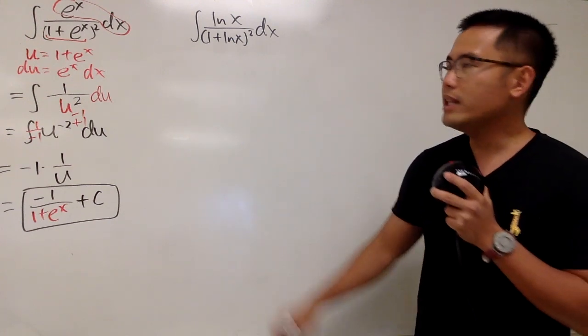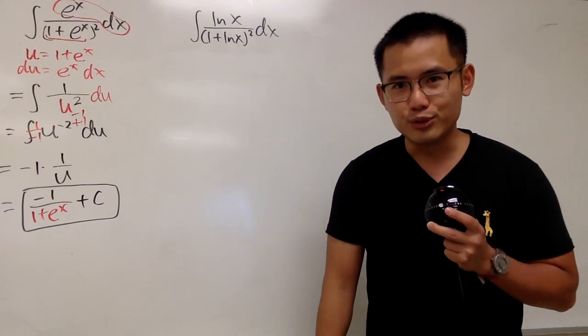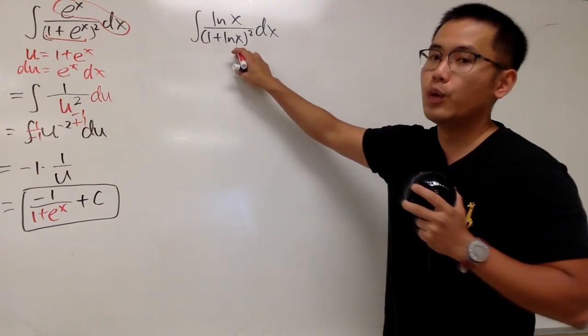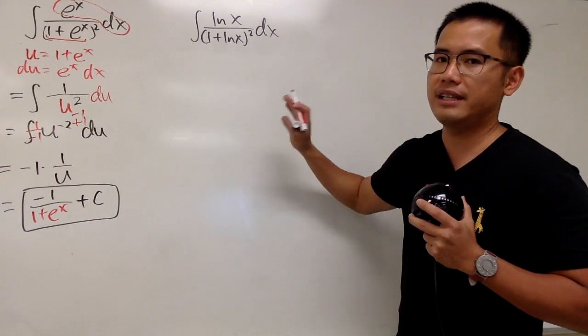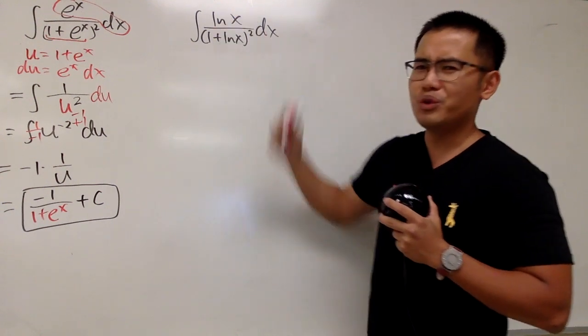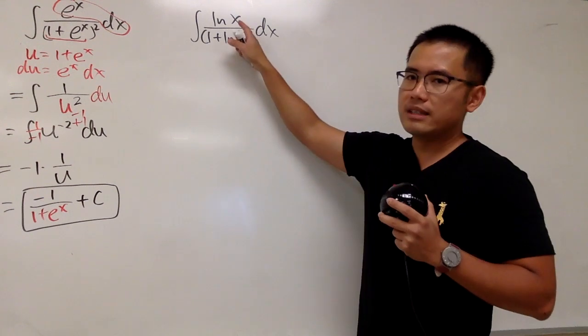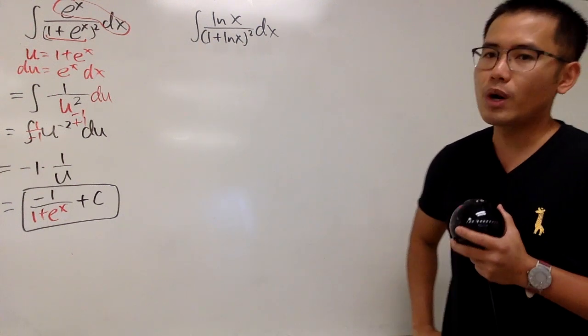Okay, now let's take a look of what if we have natural log of x right here and right here instead. Can we still use that? Well, if we let u equal to 1 plus natural log of x, we will have to get du equal to 1 over x dx. But unfortunately, we don't have 1 over x on the top. Somebody didn't give us 1 over x, somebody just gave us natural log of x. So, what can we do?